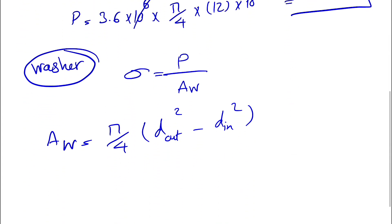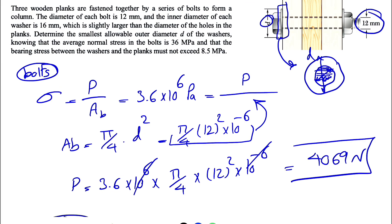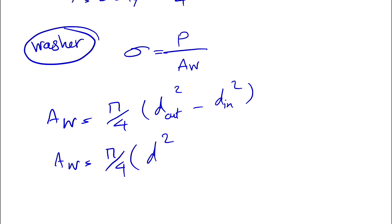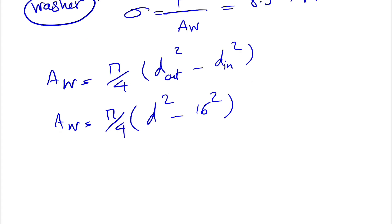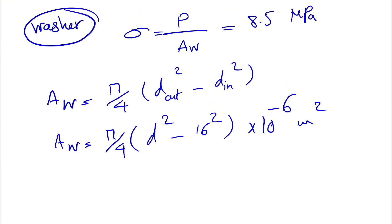From the question we know that the inner diameter is 16 millimeters, so the outer diameter is basically what the question is asking, which we showed with d. So here we're going to put d squared minus the inner diameter, which was 16 squared. Since our 16 is in millimeters, we need the 10 to the minus 6 to get it in meters squared. Now that we have this, we know that our average normal stress is P over A, or the area of the washer. So the area of washer is equal to P over the average normal stress.